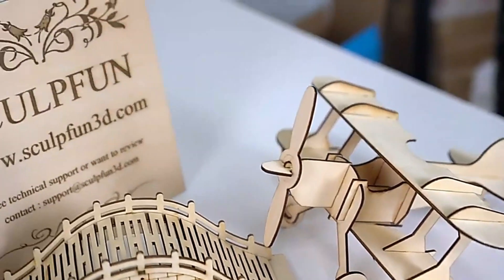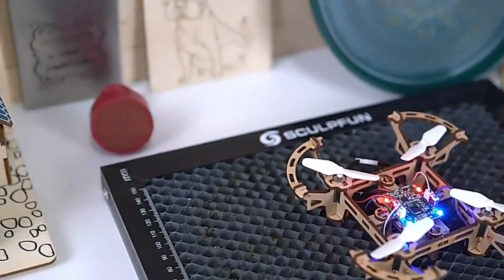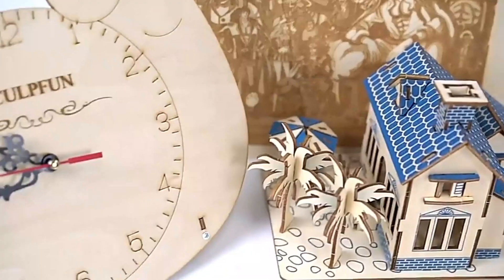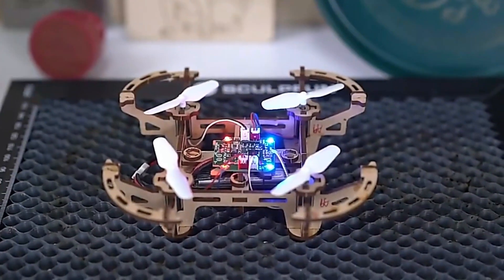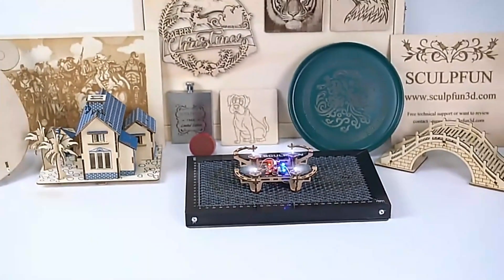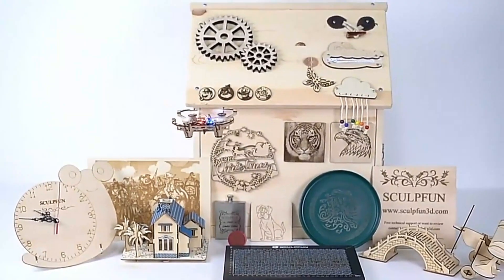Equipped with a powerful 5.5W diode laser, it delivers speed and precision for engraving on wood, acrylic, leather, and other materials. The laser wavelength of 455 plus or minus 5nm ensures accurate engraving, meeting the highest standards. The machine has an engraving accuracy of 0.01mm, setting the industry benchmark for precision.